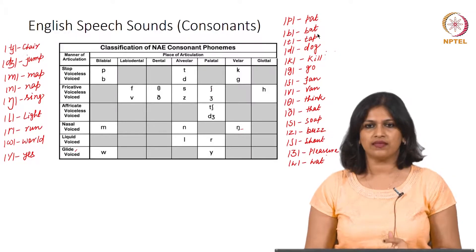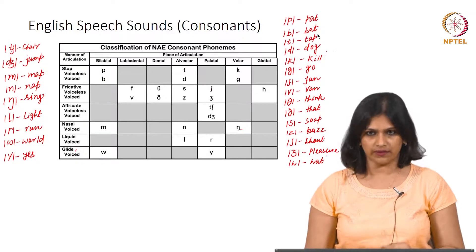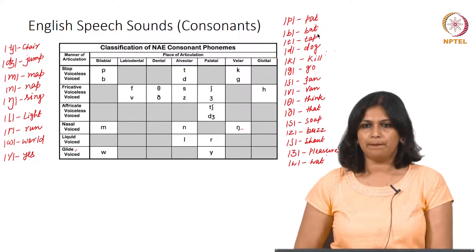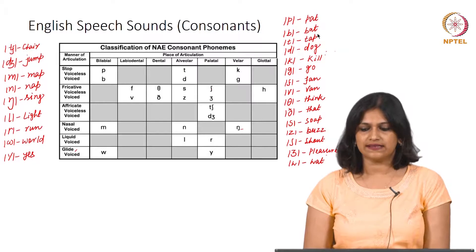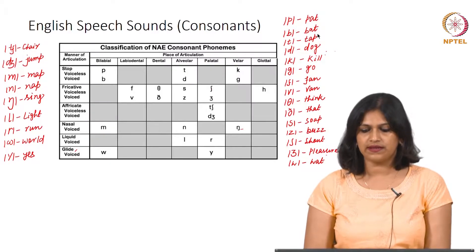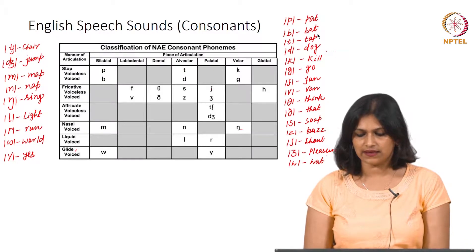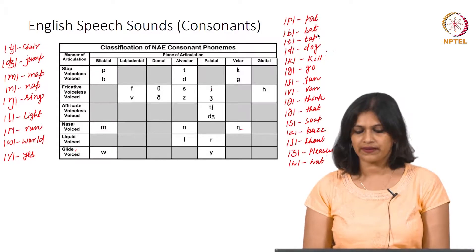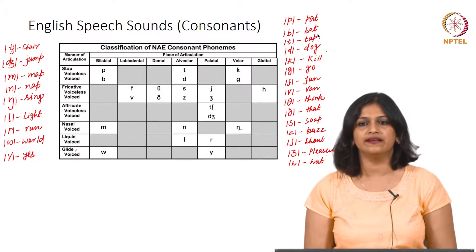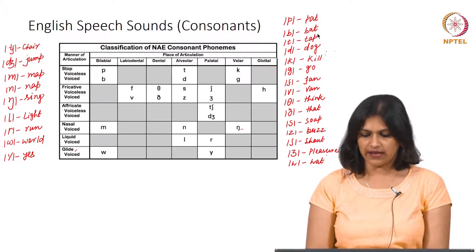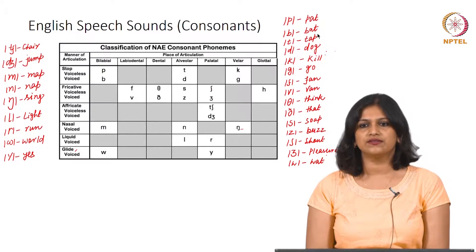When it is 'pat', the initial sound is p; 'bat', initial sound is b. We are going to follow that list: p as in pat, b as in bat, t as in tap, d for dog, k for kill, g for go, f for fan, v for van, th as in think, th as in that, s as in soap, and z — that is the final sound in buzz.